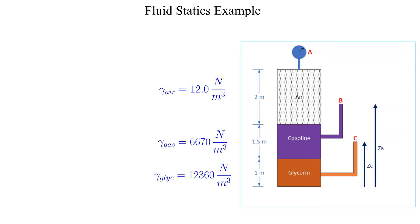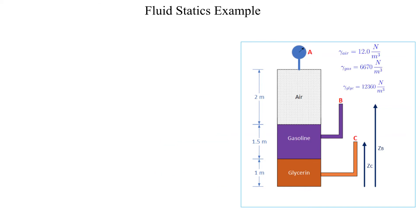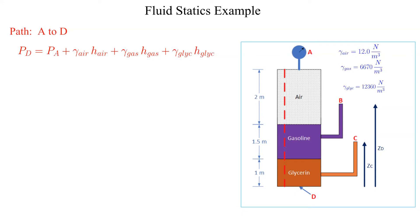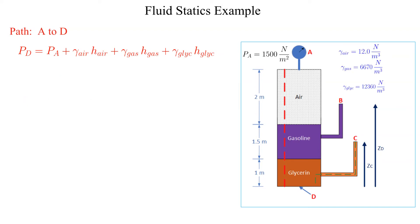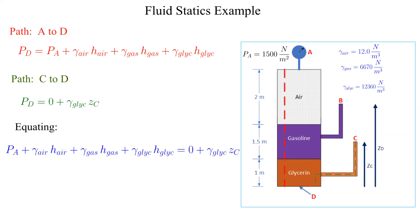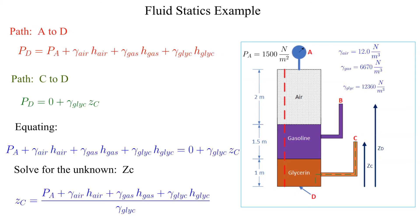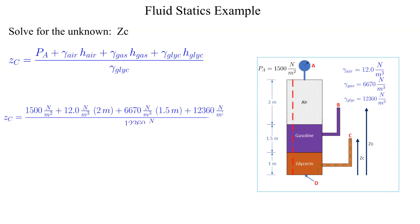Let's label point delta as the bottom of the tank. Using fluid statics, let's build an expression for the pressure at point delta along the path from alpha to delta as shown. Now let's do the same but follow the path from point charlie to point delta. We equate the two expressions for the pressure at point delta and solve for the unknown, the elevation at point charlie. Subbing in the values and the units we obtain that the elevation of point charlie is 1.93 meters.